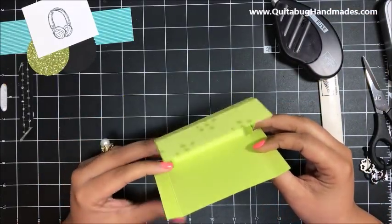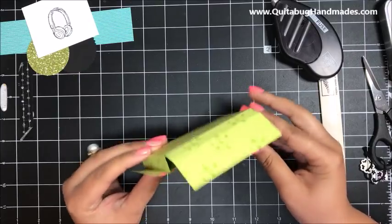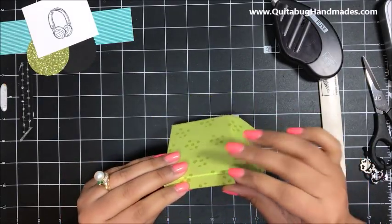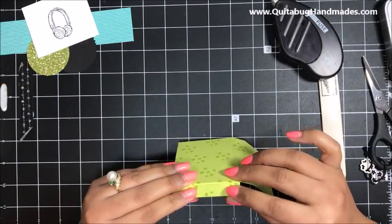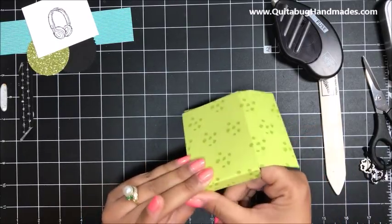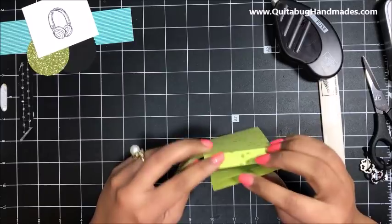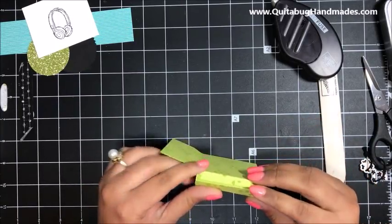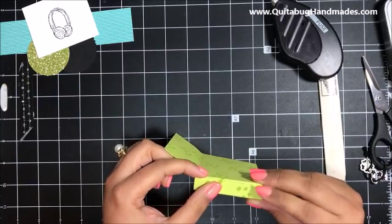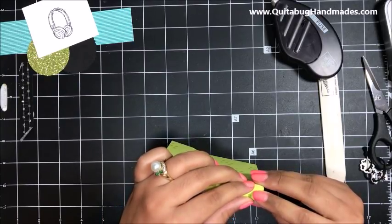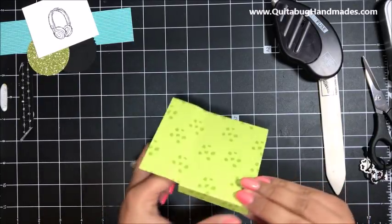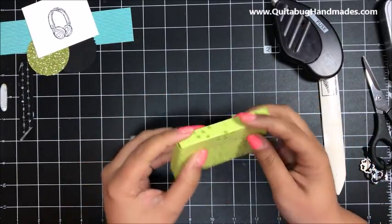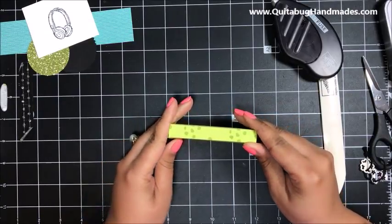Fold those in, fold those to the front, and then fold this tab to the back. Give that a press. Fold that to the back. This flap folds forward just like this.